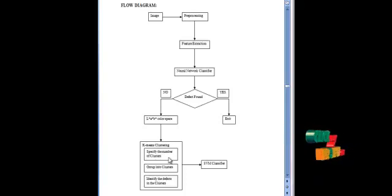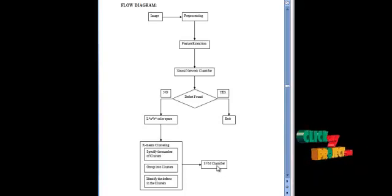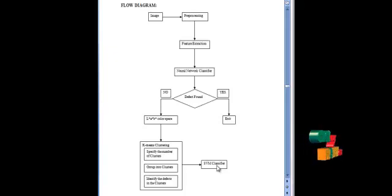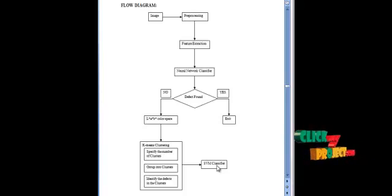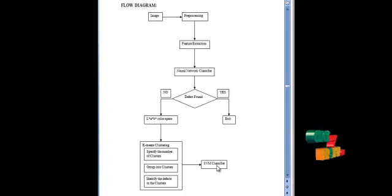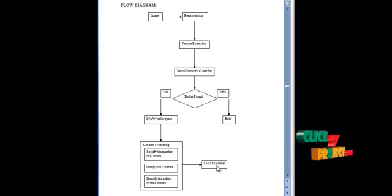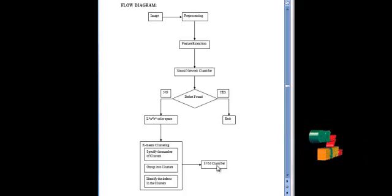Finally, we get the defected region segmented from the image, and then identify the type of defect using a multi-SVM classifier. In machine learning, SVMs are supervised learning models that analyze data, recognize patterns, and are used for classification and regression. The basic SVM takes a set of input data and predicts which of two possible classes forms the output, making it a non-probabilistic binary linear classifier. Given a set of training examples marked as belonging to one of two categories, an SVM training algorithm builds a model assigning new examples to one category or the other.